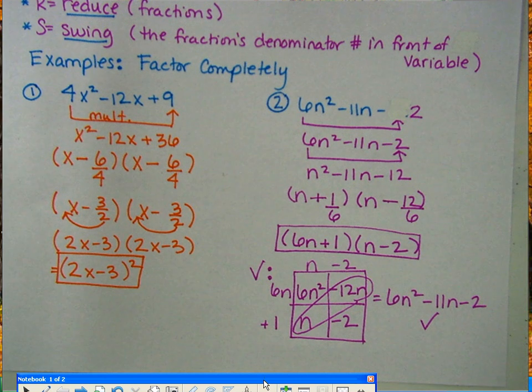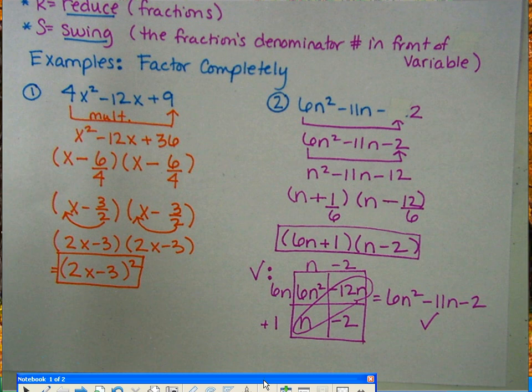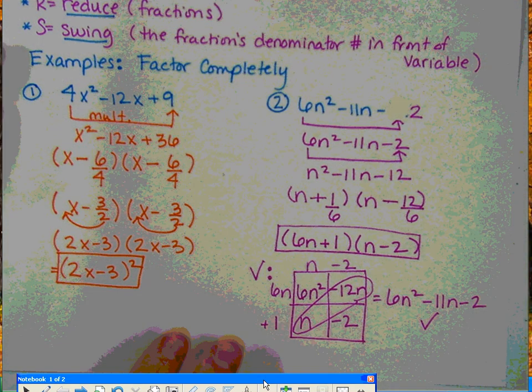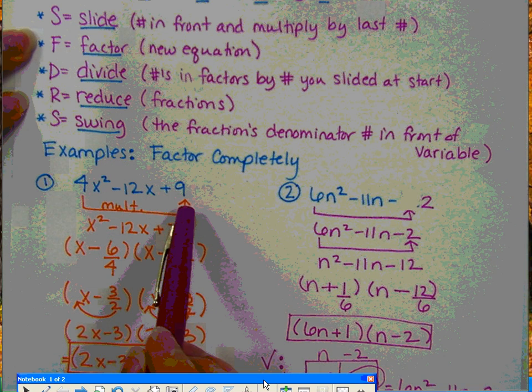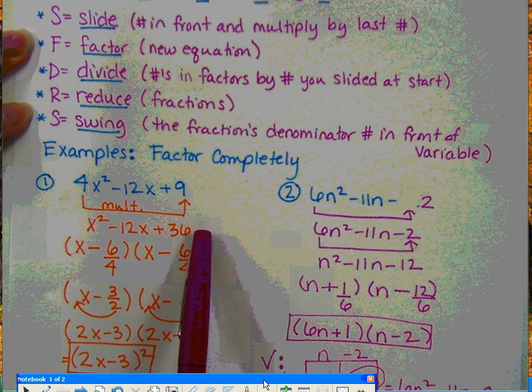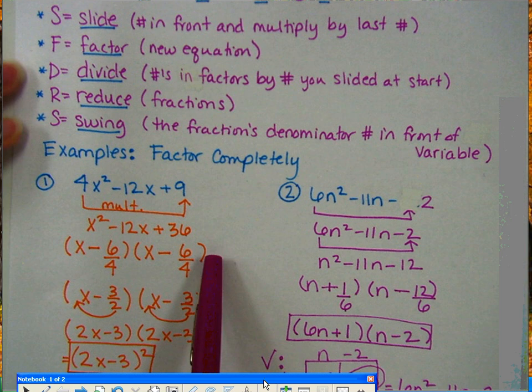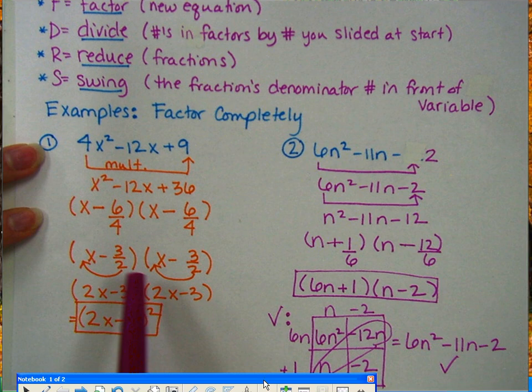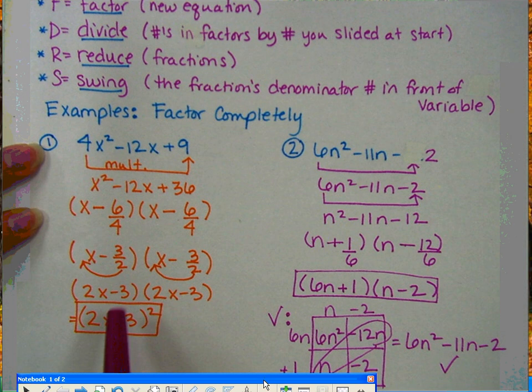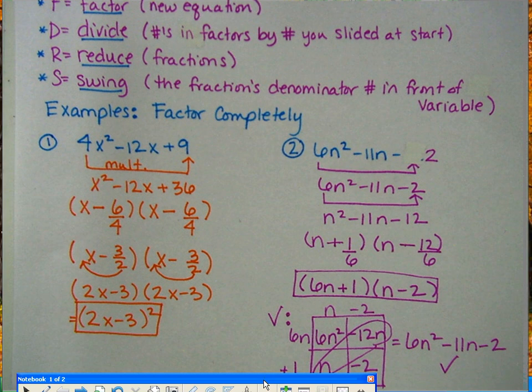So again, you're just following the steps. So what did we do? We slid the number to the back, multiply, then rewrite your equation, factor, divide by the number you slid by, reduce your fractions, and then if you have something left in your denominator, swing it in front, and of course you can always check your answers.